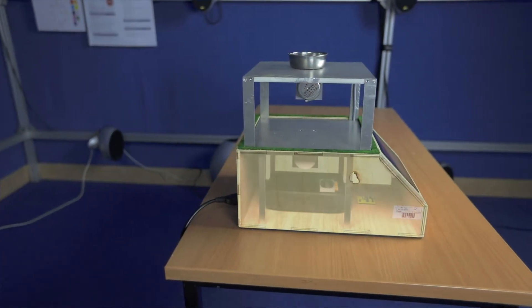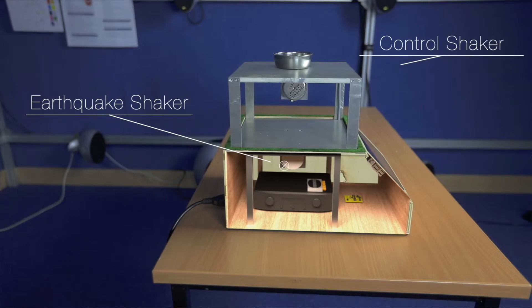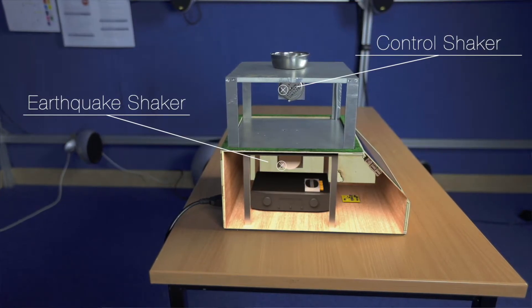The building here contains two electronic shakers: one in the base, which represents the earthquake, and another on the first floor, which will control the vibration.